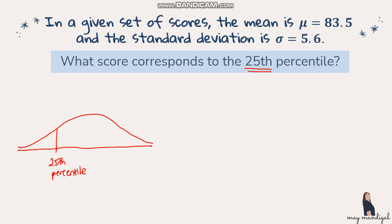If you are in the 25th percentile, you are above 25 percent of all the scores — that is the shaded region to the left. We convert this into decimal: 0.2500. This represents the area of the shaded region. Now we need to identify what z-score gives us an area of 0.25, so let's go to the z-table.